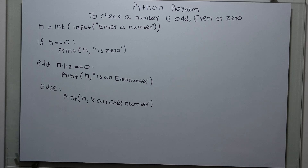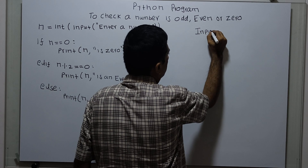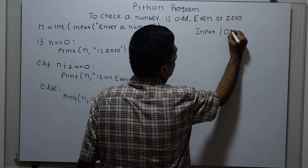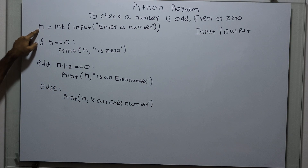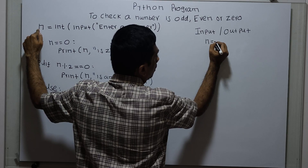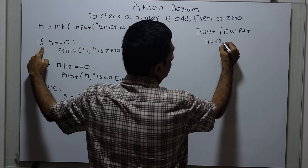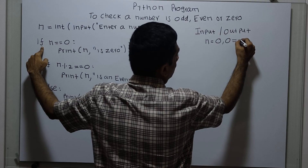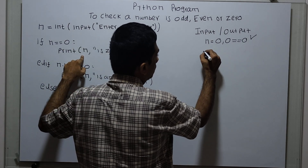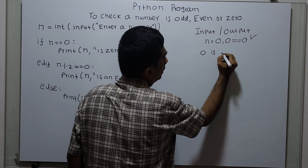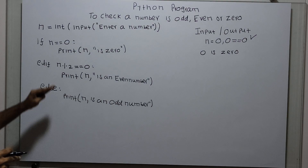Now we will take some sample inputs and check the possible outputs. For n = 0: we come and check n == 0, which evaluates to 0 == 0 — the condition is true. The print statement will get executed. Output is: 0 is 0. Then after this, the control will come out.